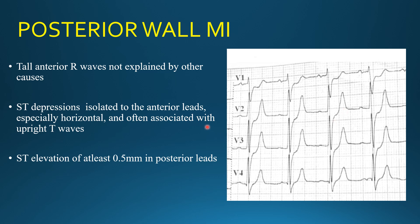The important point here is that MI goes through evolution — from early changes to later changes. It is not mandatory to find all criteria every time. In this case, posterior wall MI was progressing, which is why the R waves were getting taller but had not yet reached the classical height. With the passage of time, the R waves become tall and then the classical criteria will be fully met. Always do serial ECGs and look for the complete evolution of these changes.